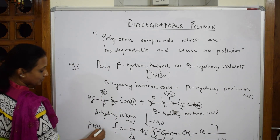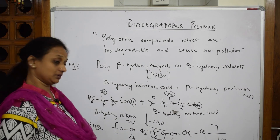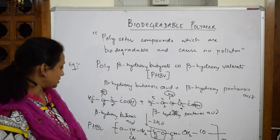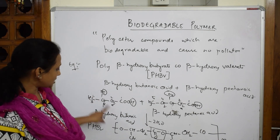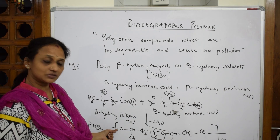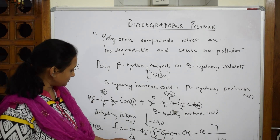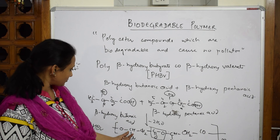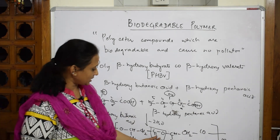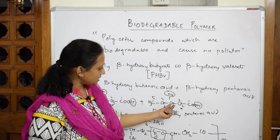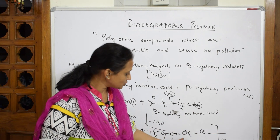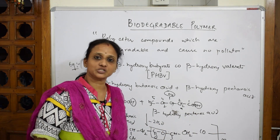This whole structure is called PHBV — polyhydroxybutyrate and valerate — a biodegradable polymer. Observe carefully: the carbon carries a hydrogen, the oxygen is the terminal oxygen, CH₃ is the side chain going down, CH₂ follows, then C=O forms the ester linkage. Where hydrogen and OH are lost, you get the side chain, then CH₂ and C=O. This is called PHBV.